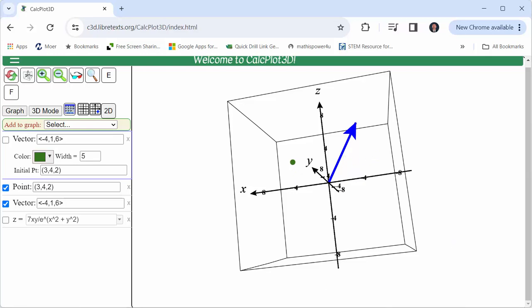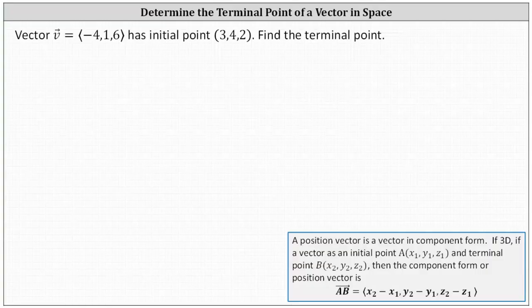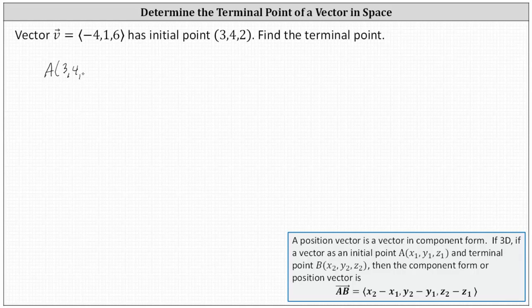Going back to our work, let's let the initial point of vector v be point A, which is the ordered triple three comma four comma two. Let's set the terminal point of vector v be point B, which will be the ordered triple x sub two comma y sub two comma z sub two.